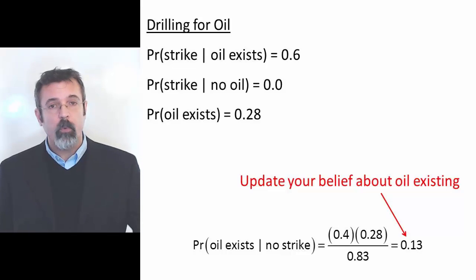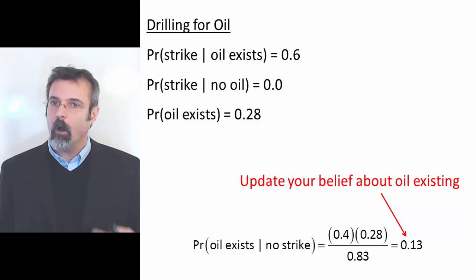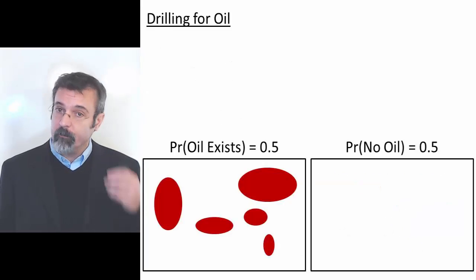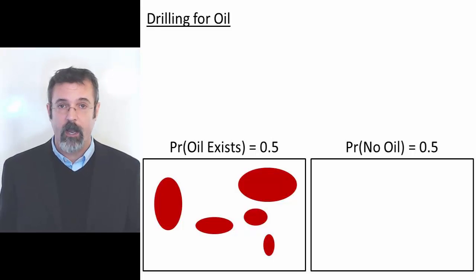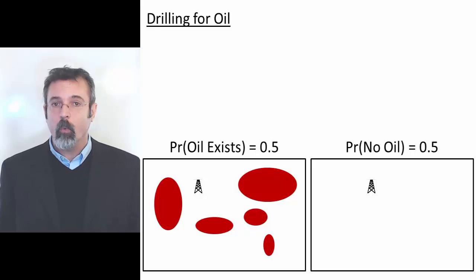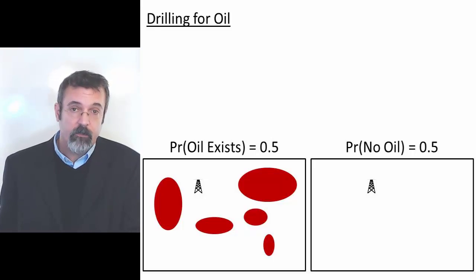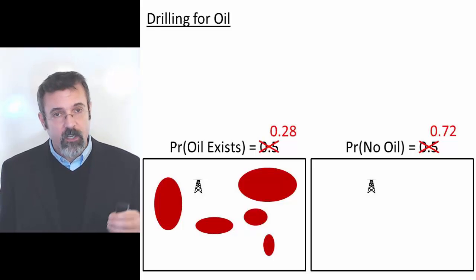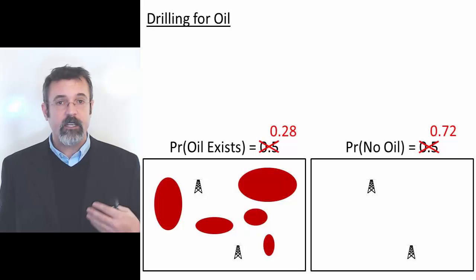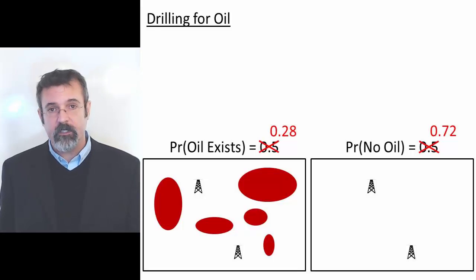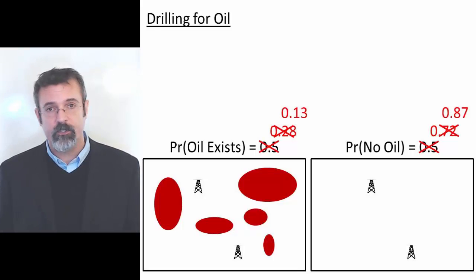And so once more we update our estimate of whether or not oil exists in the ground. We started off believing a priori that there was a 50% chance of oil. We dug a first well, it came up dry, and we updated our estimate to 28%. We then dug a second well, it also came up dry, and we updated our estimate again to 13%.